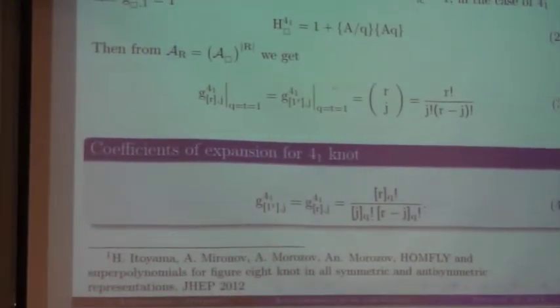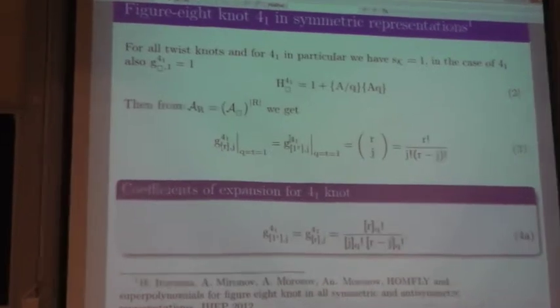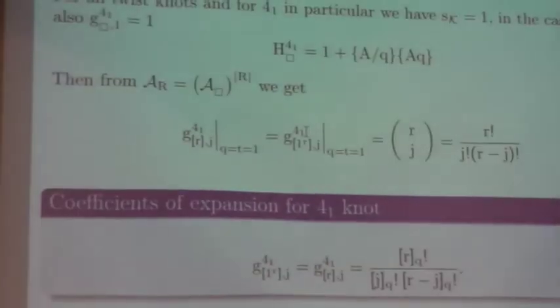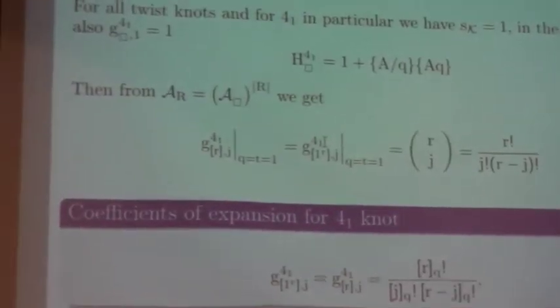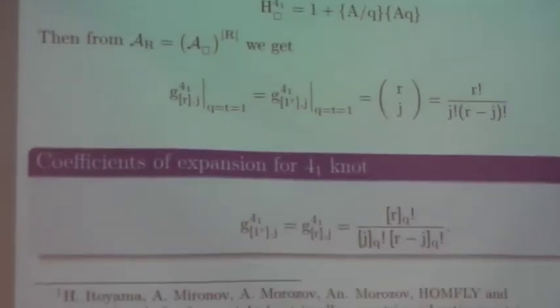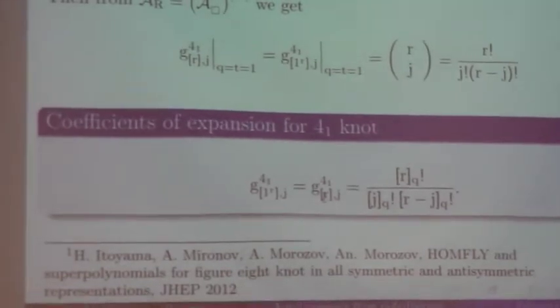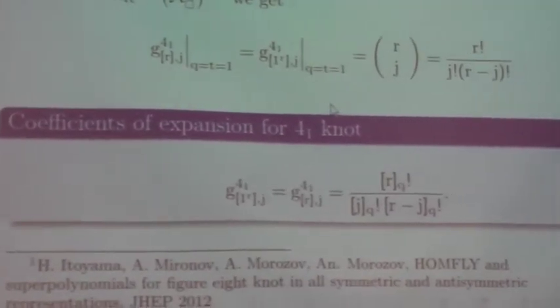So here is the formula for the q-hypergeometric series for the figure-eight knot. This is the twist knot which corresponds to k equals minus one in that picture, and this was evaluated in 2012, which in knot theory is quite long ago.